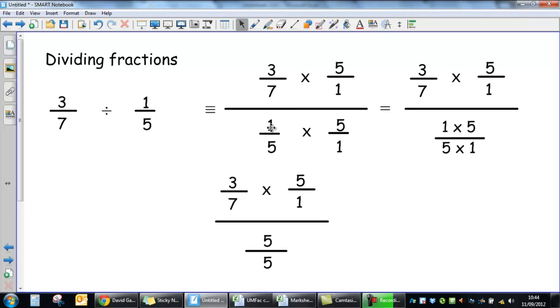So multiplying those together, that's 5 over 5. But 5 over 5 is just 1. And we already talked about that if you're dividing by 1, that doesn't actually do anything. Dividing by 1 doesn't achieve anything.